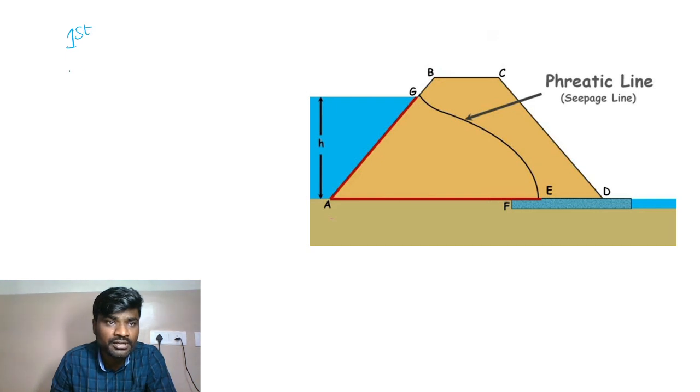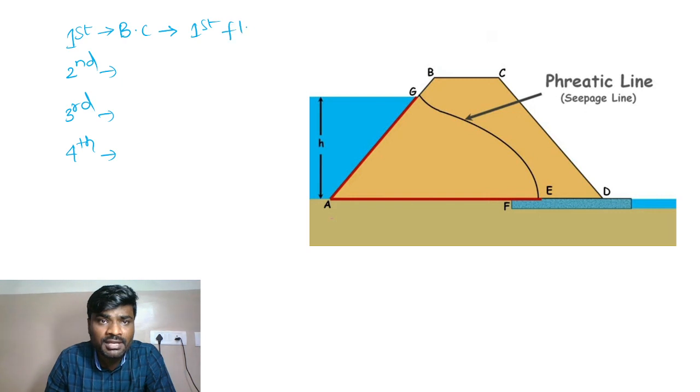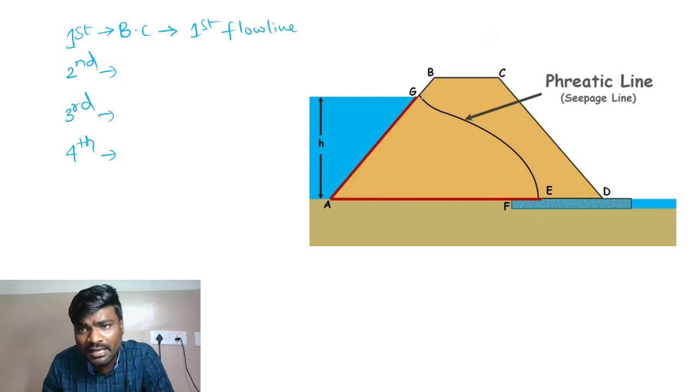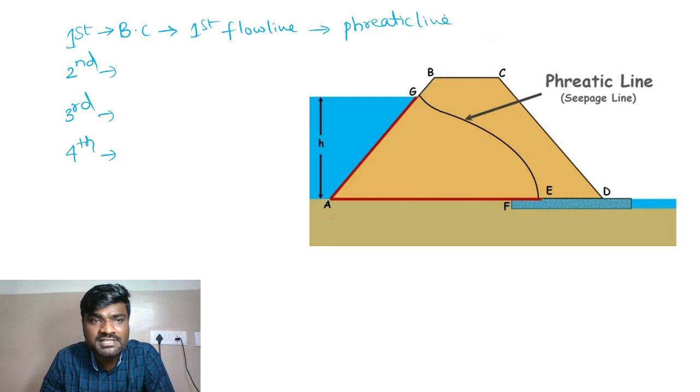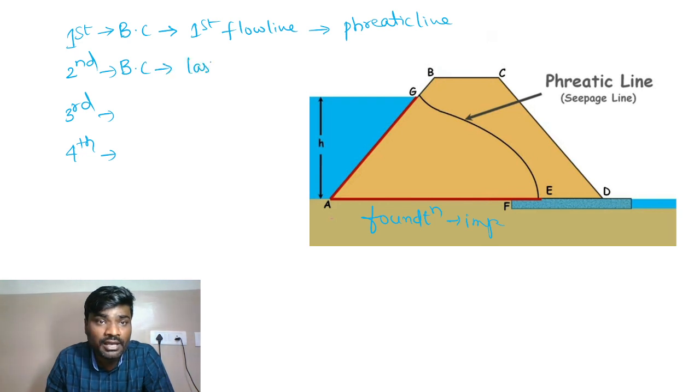Coming to the boundary conditions, there are four boundary conditions. Let's discuss each one. First boundary condition: the topmost flow line, also called phreatic line, is the first flow line. Second boundary condition: we assume the foundation is impermeable, so the second boundary condition is that the last flow line is at the bottom of the dam.